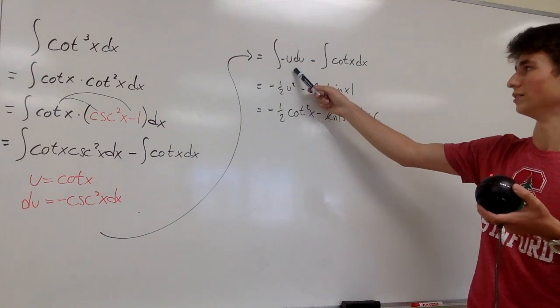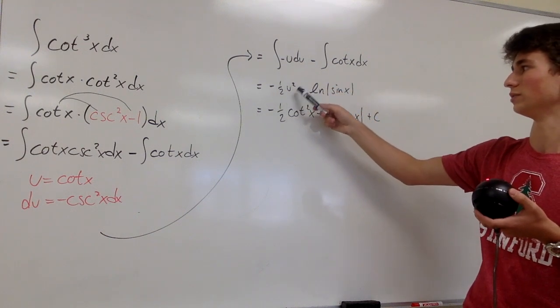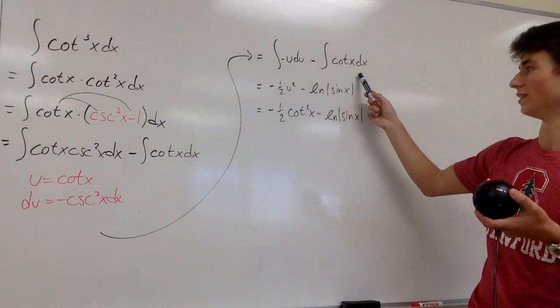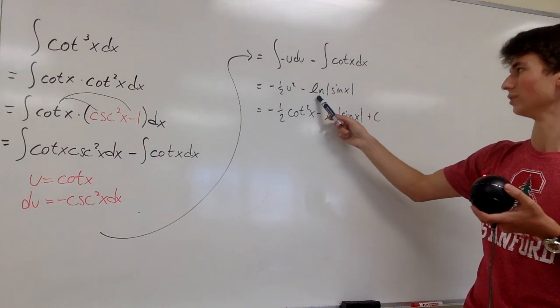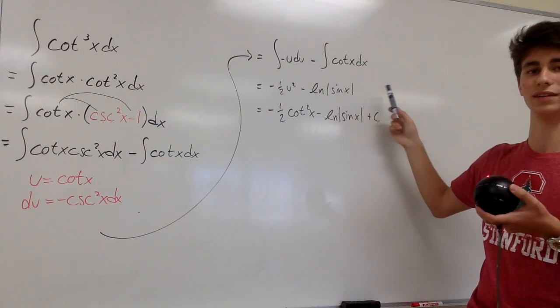And then integrating u du, you get one half u squared. And the integral of this is natural log of the absolute value of sine of x.